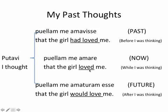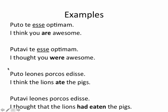You're implying that she loved you at that time. And the last one: I thought that the girl would love me — happening after I was thinking it. Here are some examples: I think that you are awesome, or I thought that you were awesome. I think that lions ate the pigs, or I think that lions had eaten the pigs. Hopefully this makes sense. If you have any questions, feel free to ask them in class. There's a Google Forms with a couple of sentences that I'd like you to translate.